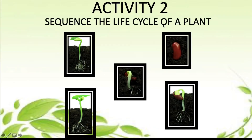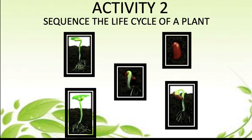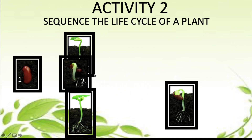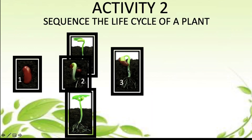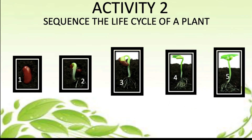Can you sequence the life cycle of a plant? Yes. Let's sequence the life cycle of a plant. Which is first — is it the seed or the sprouting seed? It is the seed. The seed comes first. Then comes the sprouting seed. Good job. Now from the sprouting seed comes the roots. The roots go deep into the soil. Then the plant begins to grow on top, and finally we see the beautiful seedling. So this is the sequence of the life cycle of a plant.